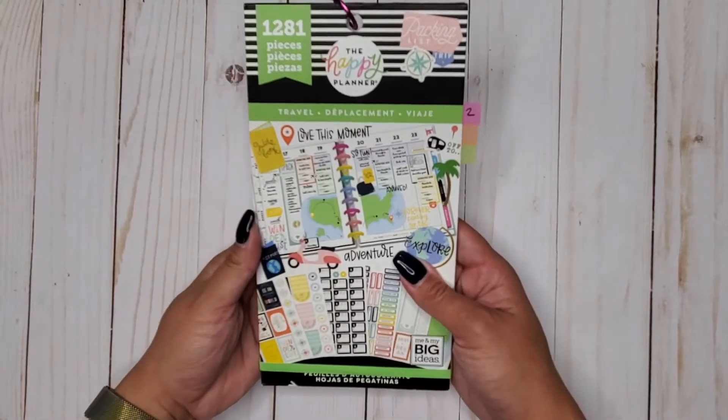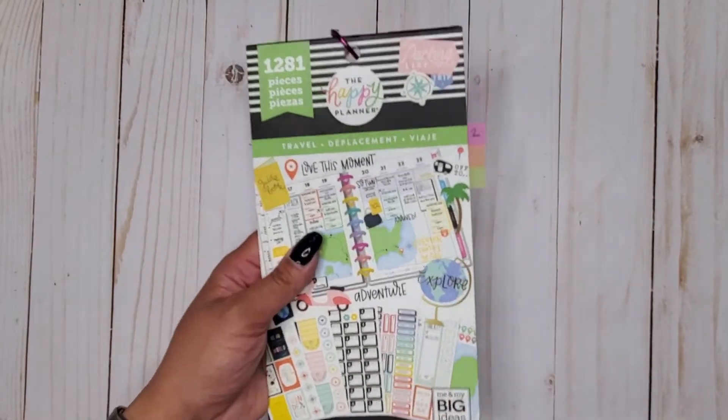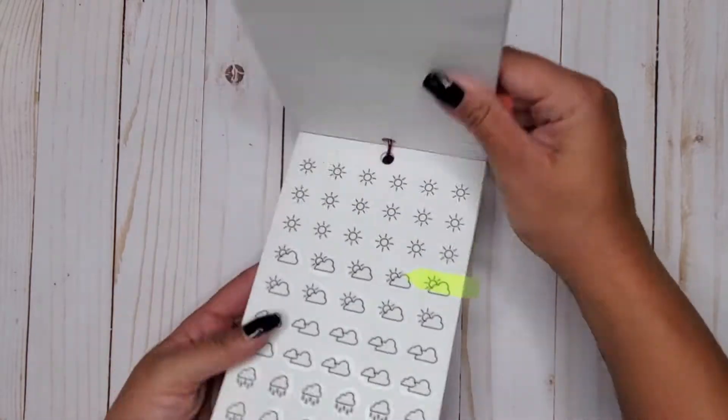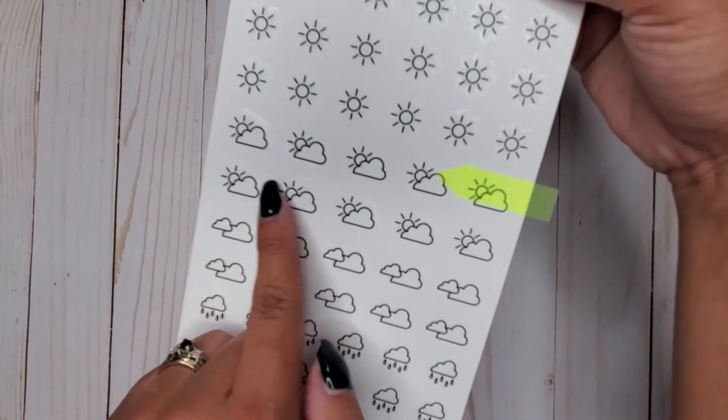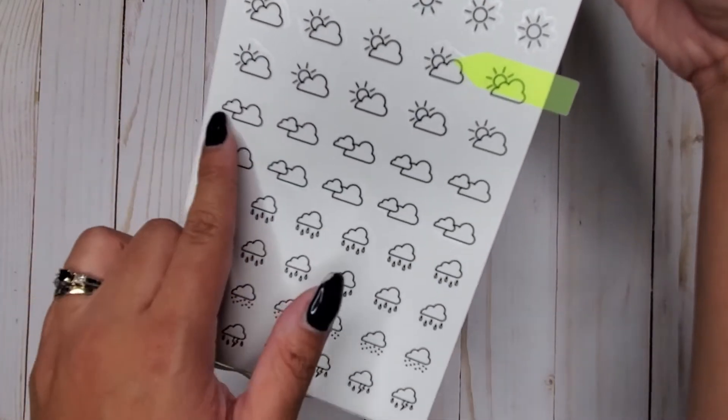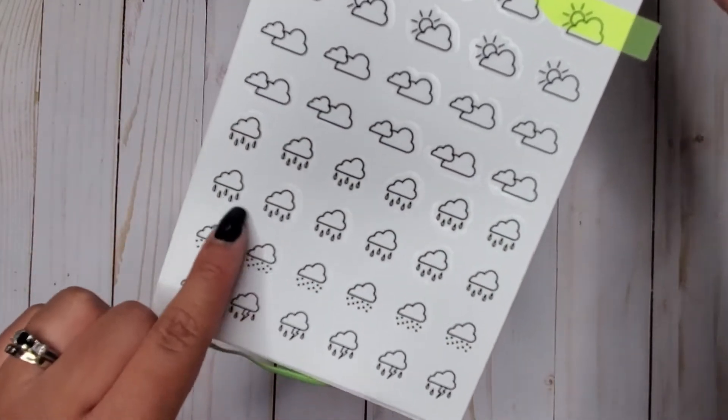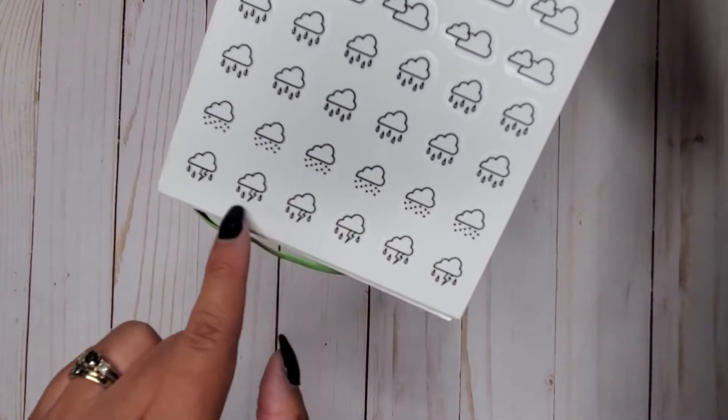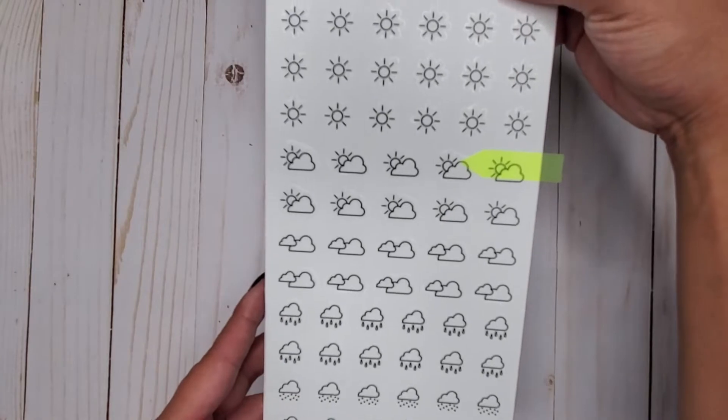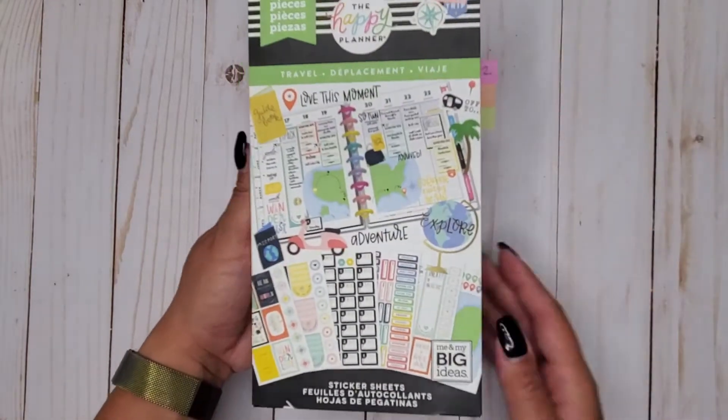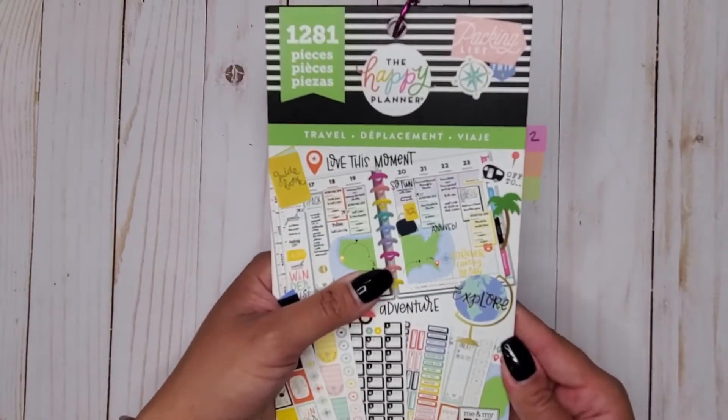Then we have travel 1281. In here we get like our little doodle ones again. These ones have our little sun, our cloud with the sun behind it, we have our cloudy day, our rain, our rain and like thunder lightning storm. These are all on clear, so a good majority of these so far have all been on clear stickers. So that is travel 1281.